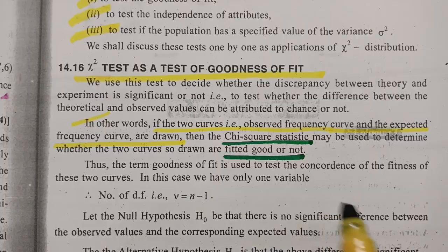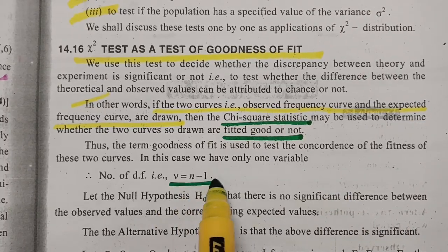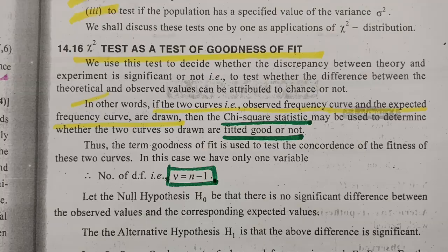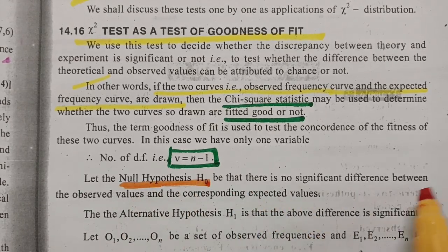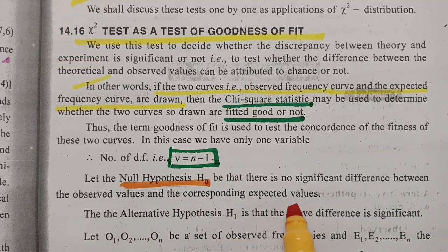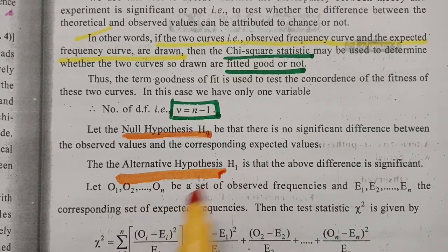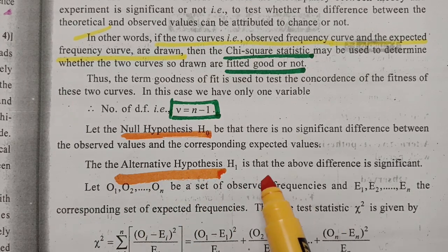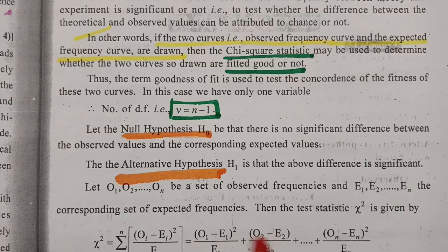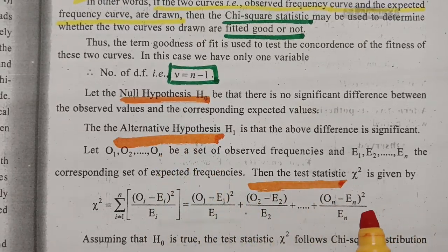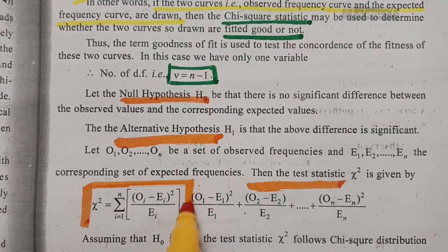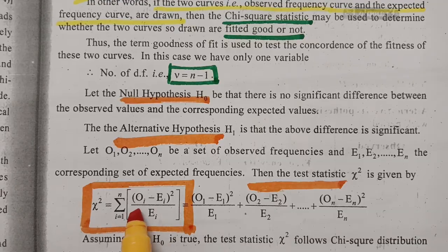The term 'goodness of fit' is used to test the concordance of the fitness of the two curves. In this case, we have only one variable, and the number of degrees of freedom V equals N minus 1. We have five steps: every time we go with the null hypothesis H0 — that is, there is no significant difference between the observed value and the corresponding expected value. The alternate hypothesis H1 states that the above difference is significant. The test statistic formula is: chi-square equals sigma from i=1 to N of (Oi minus Ei) squared divided by Ei.